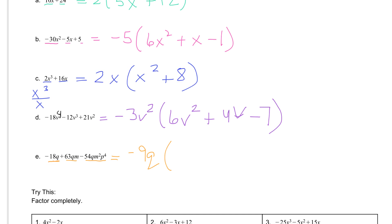Then we're left with: negative 18 divided by negative 9 is 2, and the q is taken out. In our second term, 63 divided by negative 9 is negative 7, and we took a q out, so all we're left with here is an m. In our last term, negative 54 divided by negative 9 is positive 6, the q is taken out, but the m squared and the p to the fourth are still there. Then to check: negative 9q times 2 is negative 18q; negative 9q times negative 7m is 63qm; negative 9q times 6m squared p to the fourth is negative 54qm squared p to the fourth.